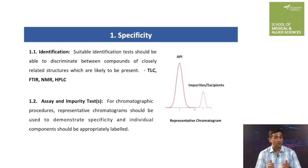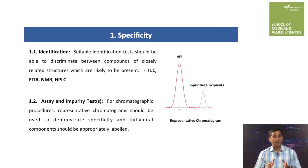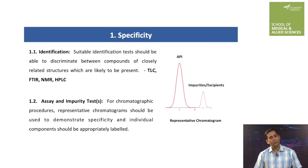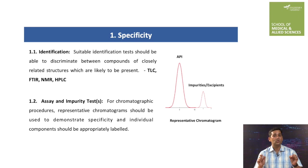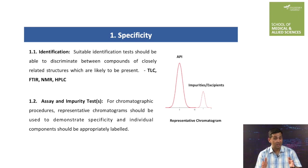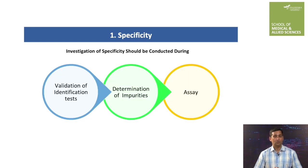Another stage where specificity is applied is assay and impurity testing. Analytical methods should be specific while performing assay and impurity tests. Taking the example of chromatographic separation, representative chromatograms should be used to demonstrate specificity of the analyte. Importantly, peaks in these chromatograms must be well resolved and properly labeled so that we can show regulatory agencies that the particular analytical method used in the assay of an API can discriminate the API from impurities.